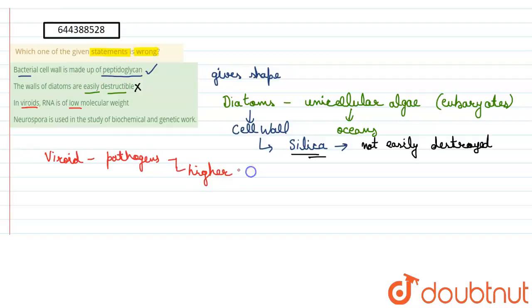And they have small circular RNA which is single stranded. The RNA which is present in viroid is small, circular and single stranded.